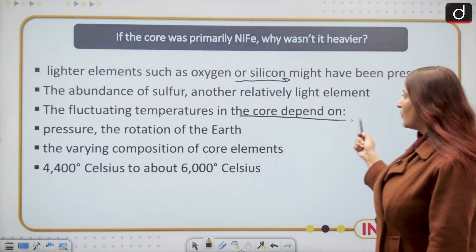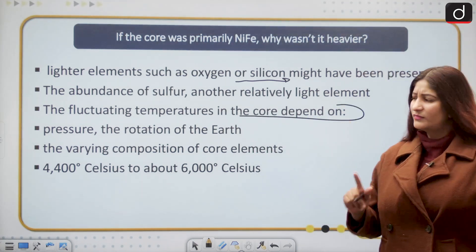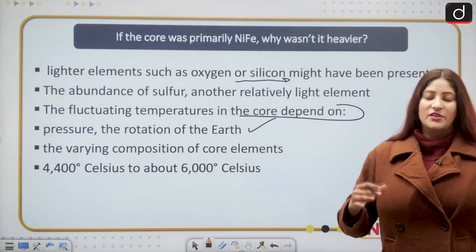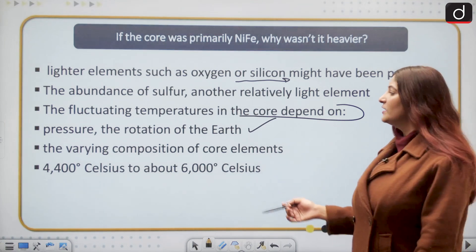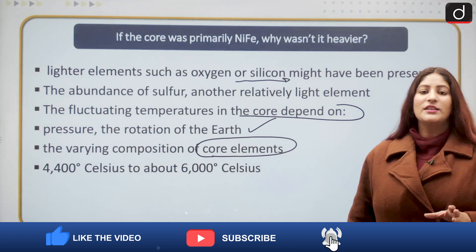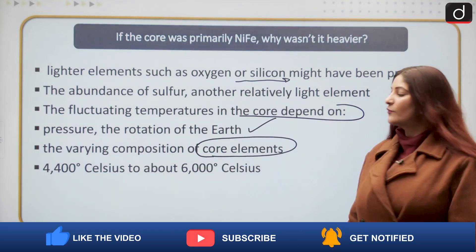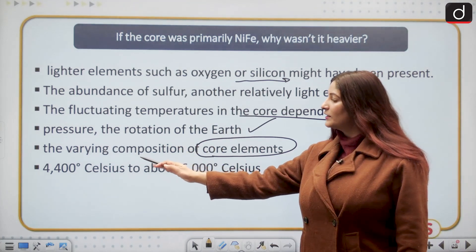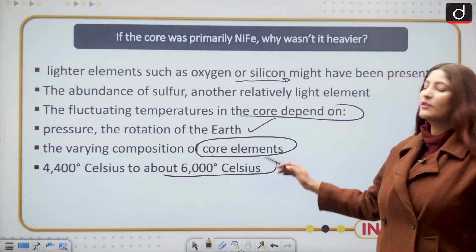The fluctuating temperature in the core depends on certain factors: first, the pressure or rotation pressure created by rotation of the earth; second, the varying composition of the core elements. The range of temperature goes from 4400 degrees Celsius to about 6000 degrees Celsius.